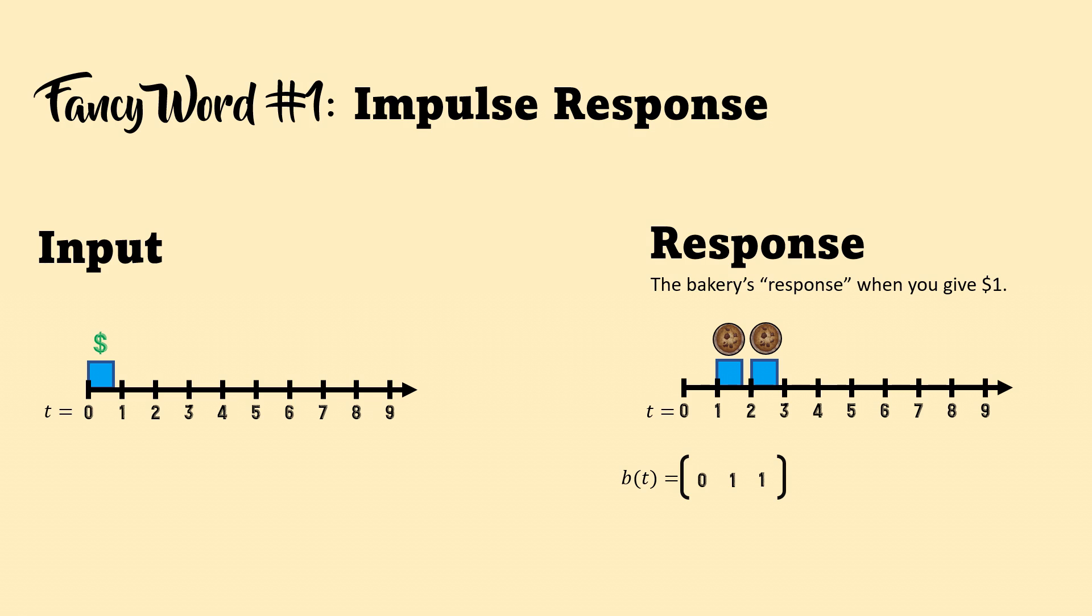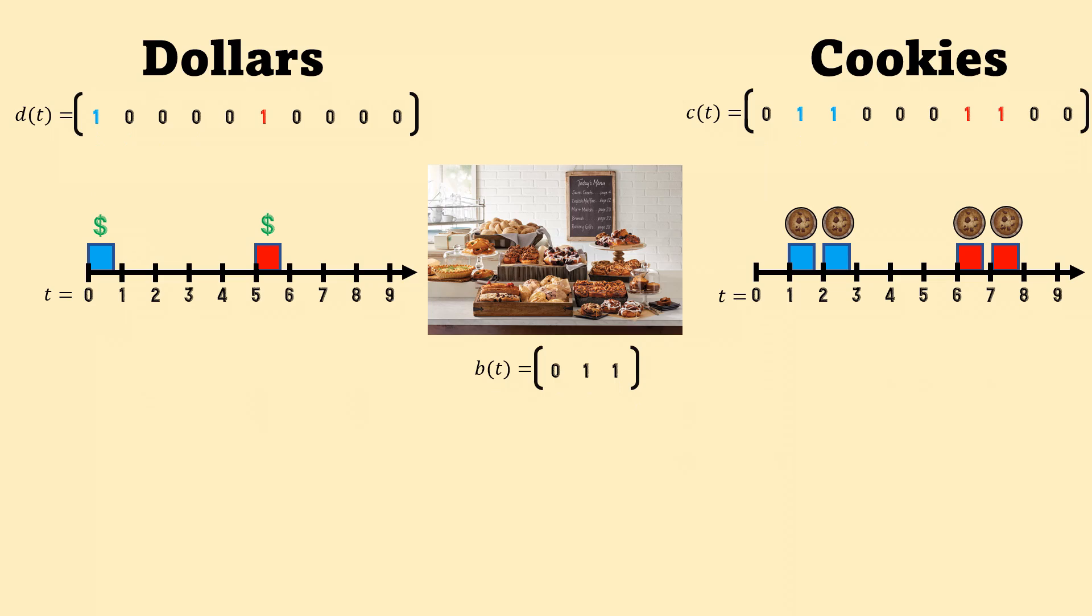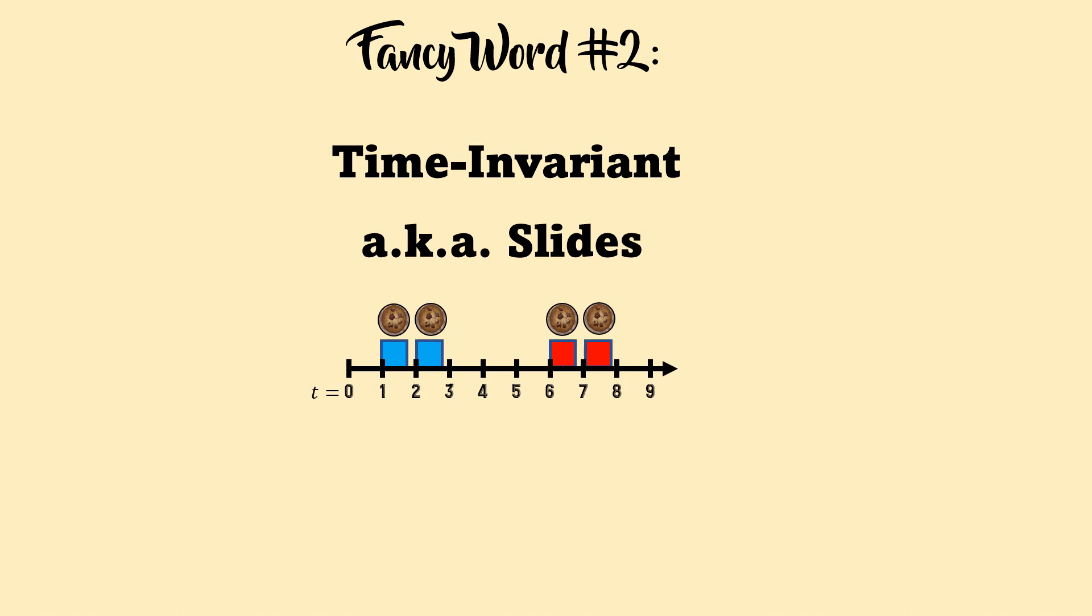So from now on, I will use the terms B of T or impulse response interchangeably. There's nothing stopping us from putting two impulse responses on the same number line if we give an extra dollar a couple of days later. No matter where we put the second dollar, we get the same response. We get to slide around the response along the number line without fear of the bakery changing its policy. If you can slide the impulse response all over the time axis without having it changed, you can call this system time invariant. The bakery's response to your dollar does not vary with time.